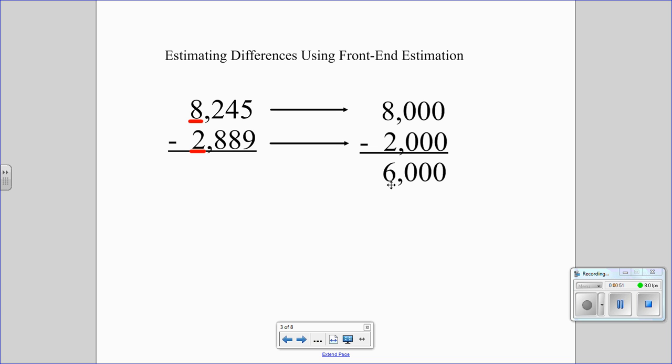Students a lot of times don't like this kind of estimation because it's not close enough, but what I say is if you estimate this answer at 6,000 and then you do the math and for some reason you got 10,000, it might indicate to you that oh, I added it. So this gives you a quick idea—it should come up to be around 6,000.